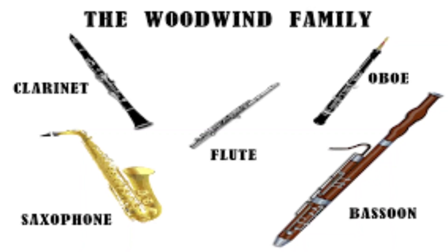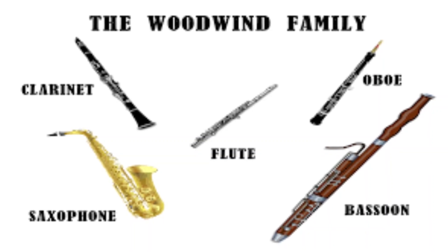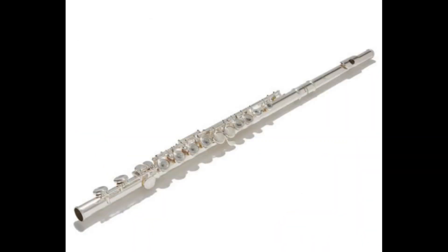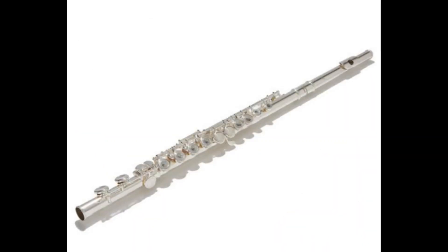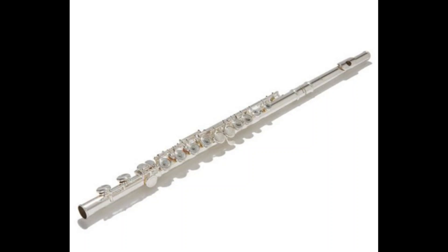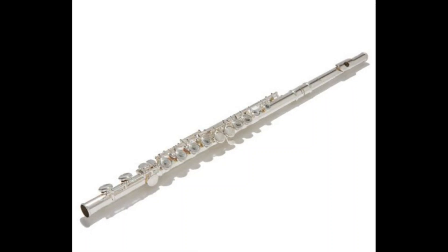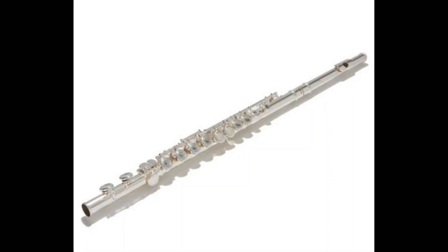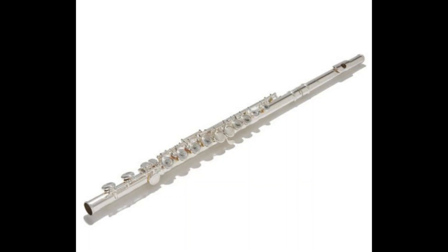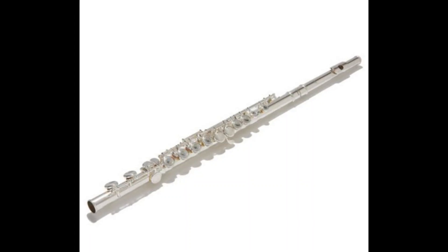Let's start with the woodwind family. The woodwind family is made up of flutes and reed instruments. The first instrument is the flute. The flute is the highest pitched instrument in the band. It is played by blowing air across the embouchure hole and pressing down different combinations of keys, rather than using a reed or buzzing into the mouthpiece.